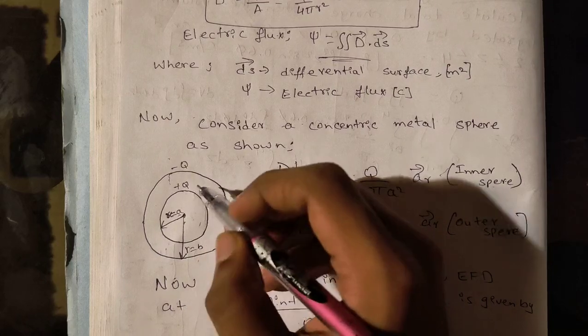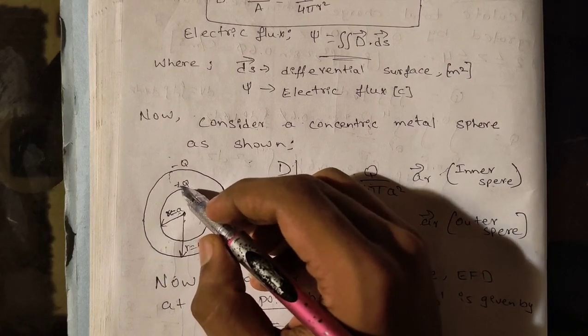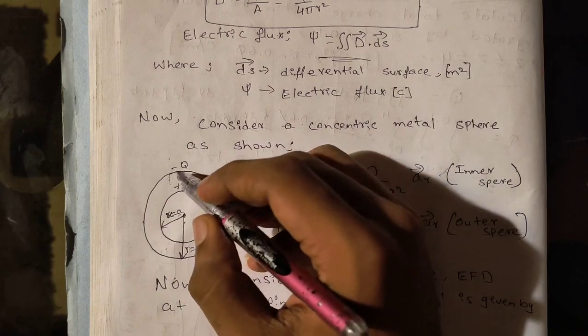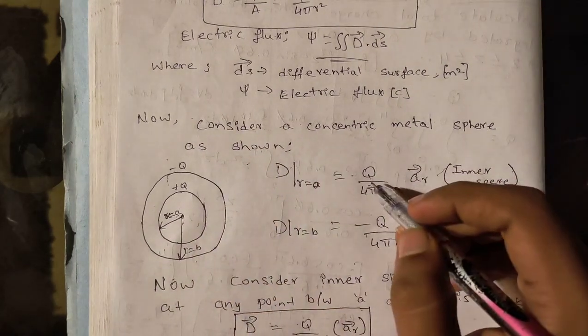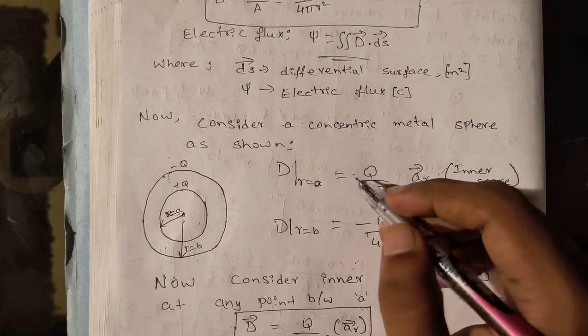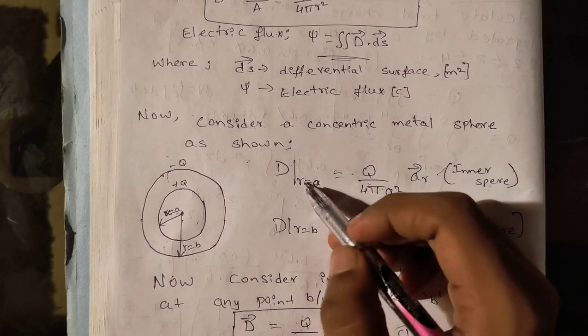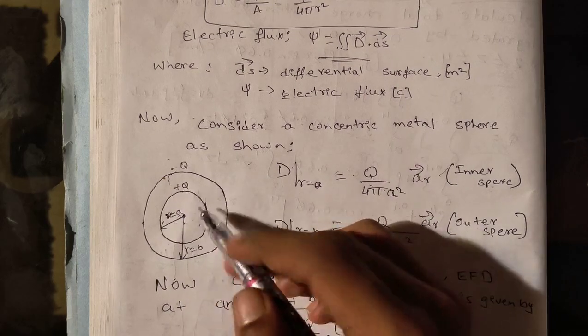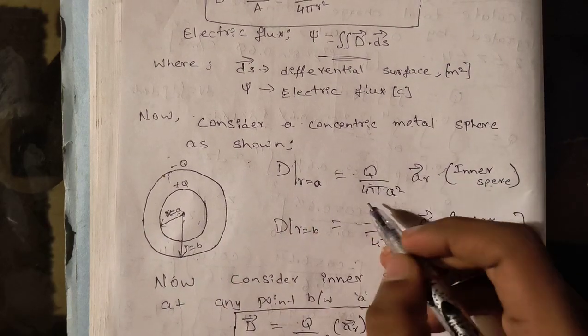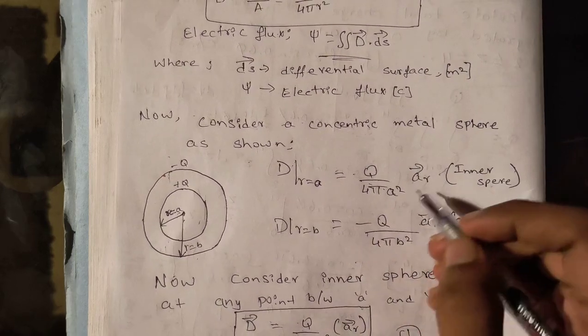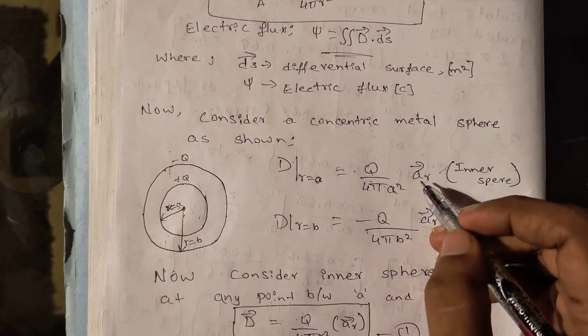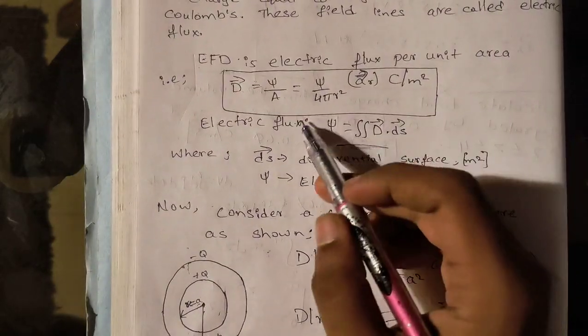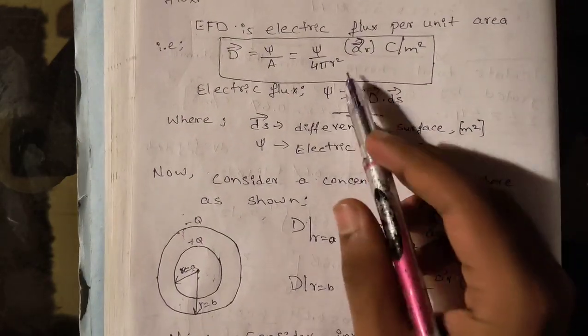Here r may be different lengths. Here r equals a, r equals b. The inner surface has charge plus Q, and the outer surface has charge minus Q.